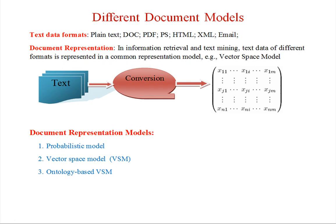There are different document models for different text data formats: plain text, PDF, PostScript, HTML, XML, email, etc. To represent the document, first apply a conversion technique to text, then represent the document in matrix form where every row represents a document and every column represents a term. For example, x(1,1) represents the first term of the first document, and x(1,i) represents the i-th term of document 1.